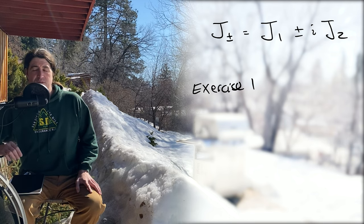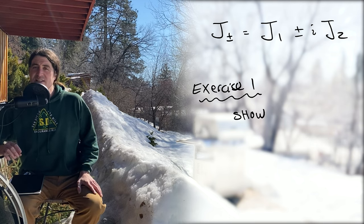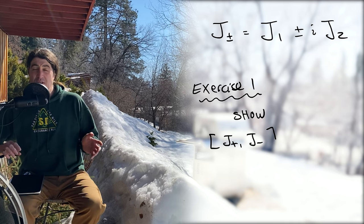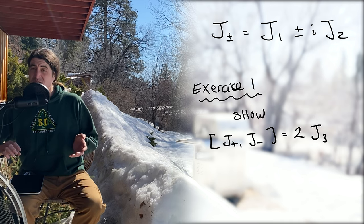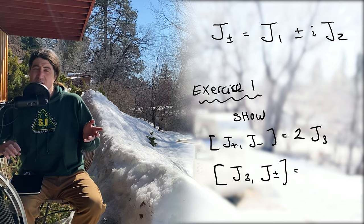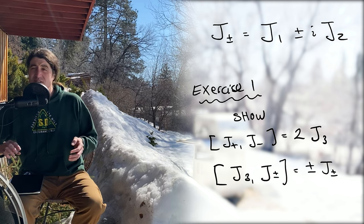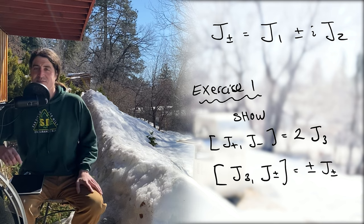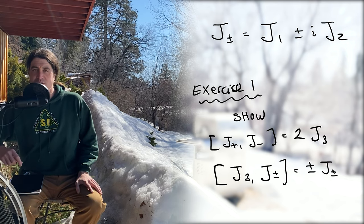So the first exercise worth showing is that [j_plus, j_minus] is equal to twice j_3, and that [j_3, j_plus or minus] is equal to plus or minus j_plus or minus. These relationships will be handy in what follows.